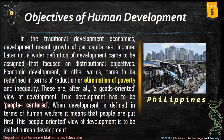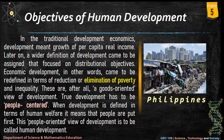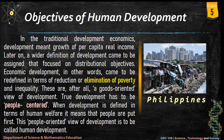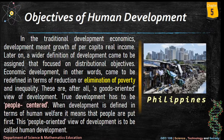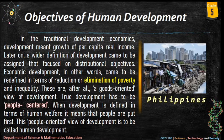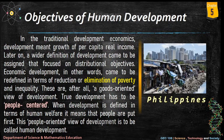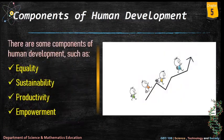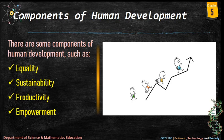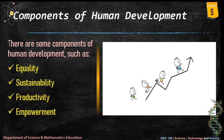These are a goods-oriented view of development. True development has to be people-centered — when development is defined in terms of human welfare, it means that people are put first. This people-oriented view of development is called human development. There are some components of human development: equality, sustainability, productivity, and empowerment.